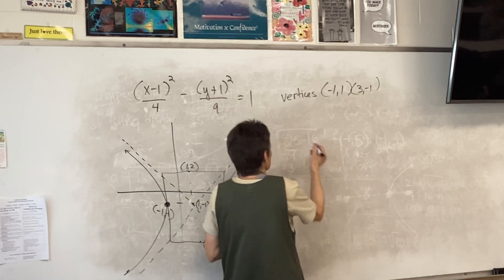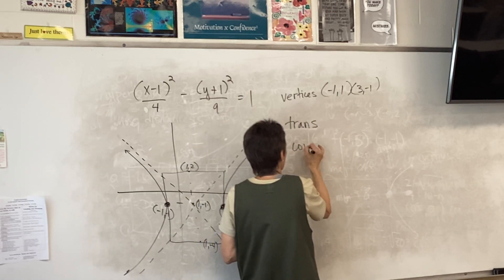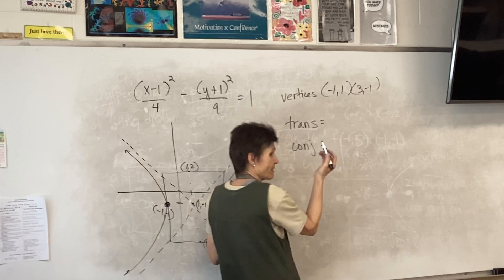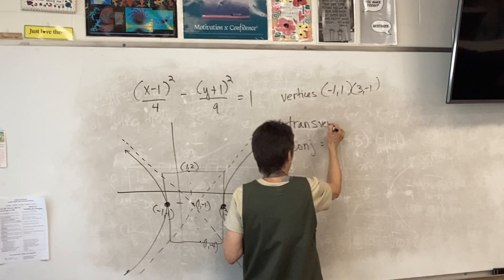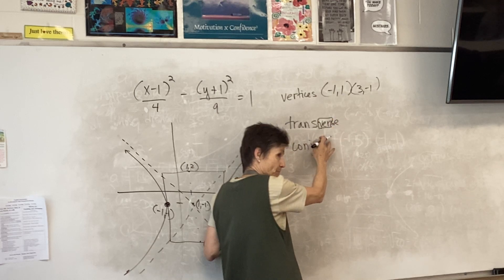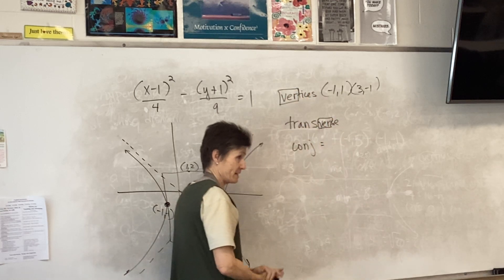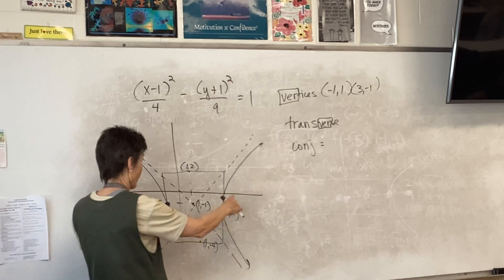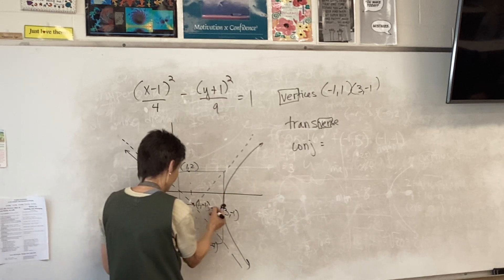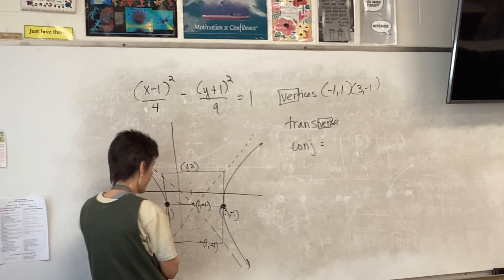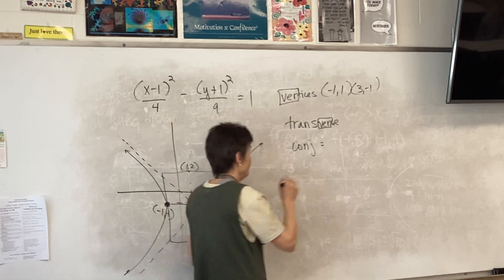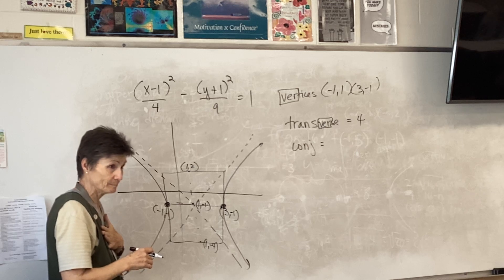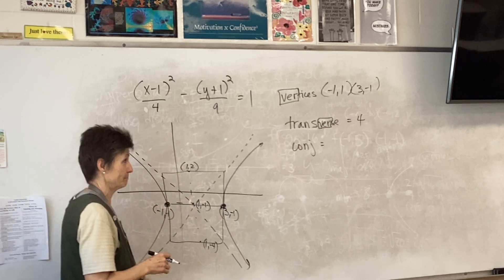Now if you look at the directions, we also have to find our transverse and conjugate axes. Remember what I told you — the word 'transverse' contains 'ver,' which matches with 'ver' in vertices. So the transverse axis is the one that connects the vertices. How long is it? Four. And the conjugate axis is the other one, which is six.